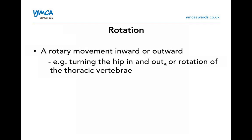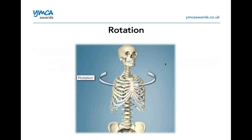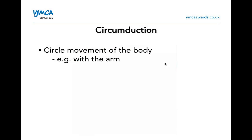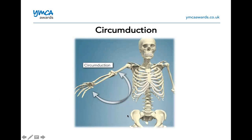Rotation is a rotary movement inwards or outwards — turning the hip in and out, or rotating through the thoracic vertebrae, just twisting round. If you stand up and turn your feet inwards, you're doing internal rotation of the hip joint. External rotation is taking your feet out to the side, like a duck position. Circumduction is basically taking your arm by your side, lifting it all the way up and taking it all the way around in a big circle — that is circumduction.